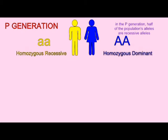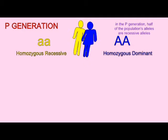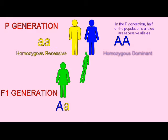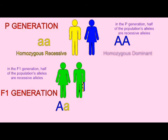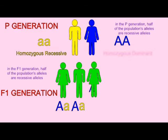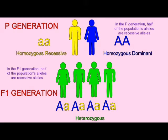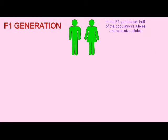The frequency of an allele in a population should remain about the same unless external forces act on it. In this case, there are two individuals homozygous for a trait; half of the alleles in this original pair are the recessive alleles. In the F1 generation, all individuals are heterozygotes, but once again half of the alleles in this group are the recessive allele.